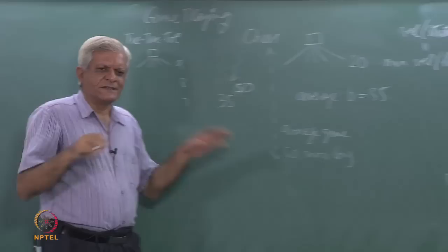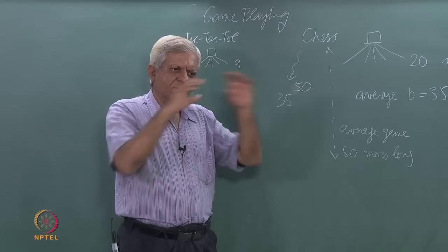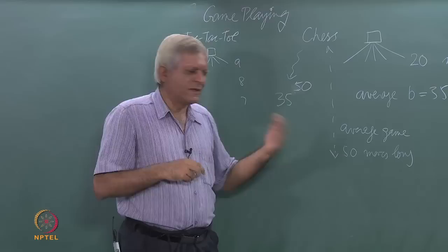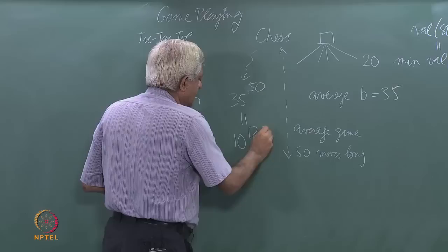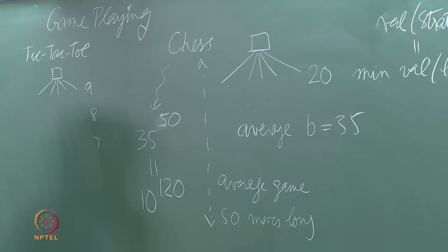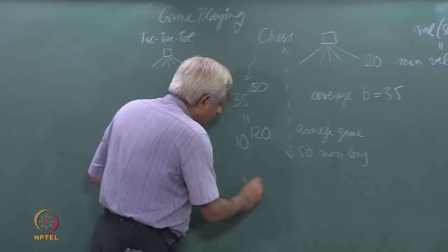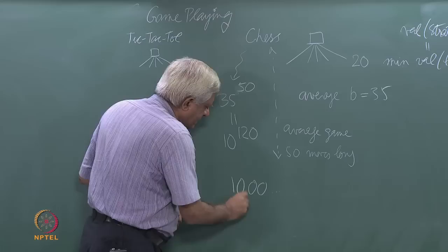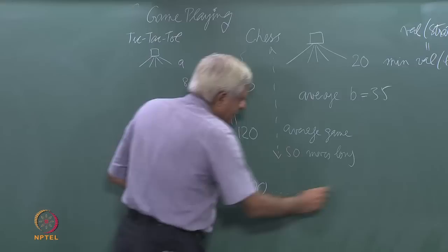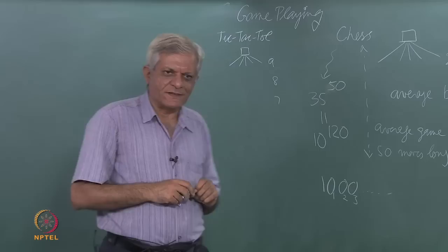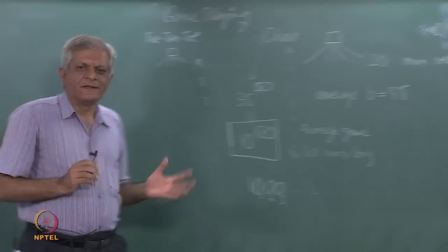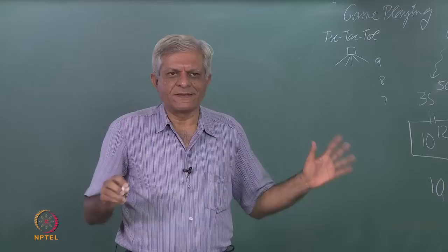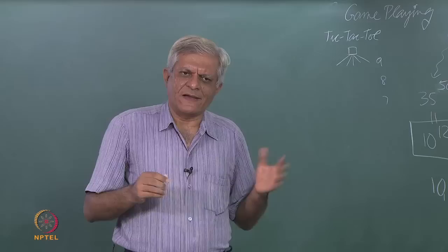If the branching factor was constant at thirty-five, then you can see: top level thirty-five moves, then another thirty-five moves for each of those moves, and so on. Since it is fifty moves long, 35 raised to 50 equals about 10 raised to 120. Just to dramatize the point — if I started writing zeros, this is the first zero, this is the second zero, and I would have to keep writing to the end of the board till I write the one hundred and twentieth zero. This is not a number you can trifle with. There is no hope of ever solving the chess game tree completely, and in fact we have not been able to solve it.